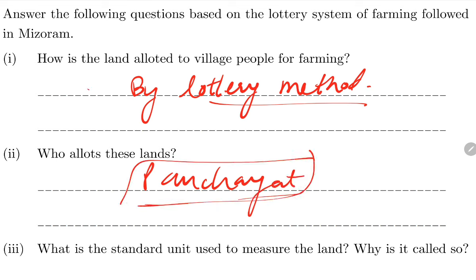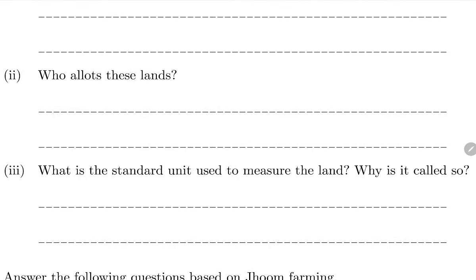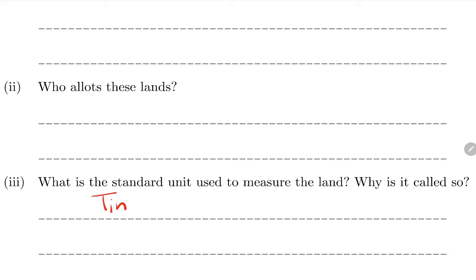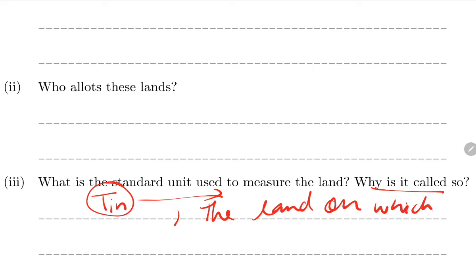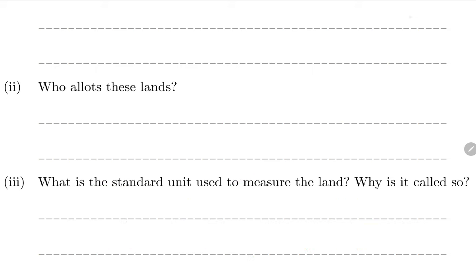Who allots this land? The Gram Panchayat allots the land. What is the standard unit of measurement of land in Mizoram? It is called 'tin'. Land is measured in tin - for example, '3 tin land' means the amount of land on which 1 tin of seed can be grown. So 3 tin means the land where 3 tins of seed can be cultivated. Remember the state name - Mizoram - for this question.